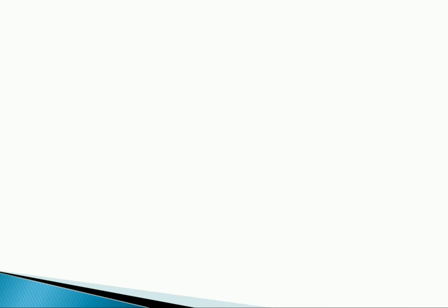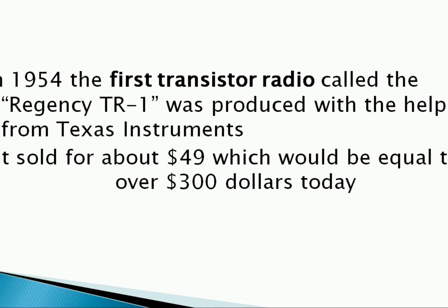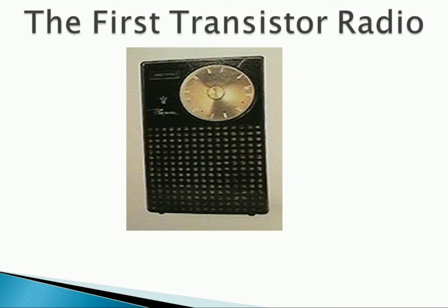Hearing aids were the first commercial application of the new solid state invention in 1952. In 1954, the first transistor radio called the Regency TR-1 was produced with the help from Texas Instruments. It sold for about $49, which is now equal to over $300 today. This is the first transistor radio.